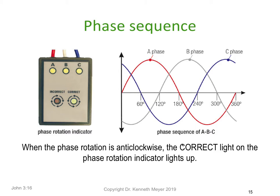One of the tools we use to make sure our phases are connected and rotating in the right order — because it's very easy to get A, B, and C mixed up — is a rotational phase indicator. You can see it has red, white, and blue connections. You just connect it to each of the phases, and if they're rotating in the correct direction the correct LED will illuminate. If it's incorrect, the red LED will illuminate. When the phase rotation is clockwise, the correct light on the phase rotation indicator simply lights up.